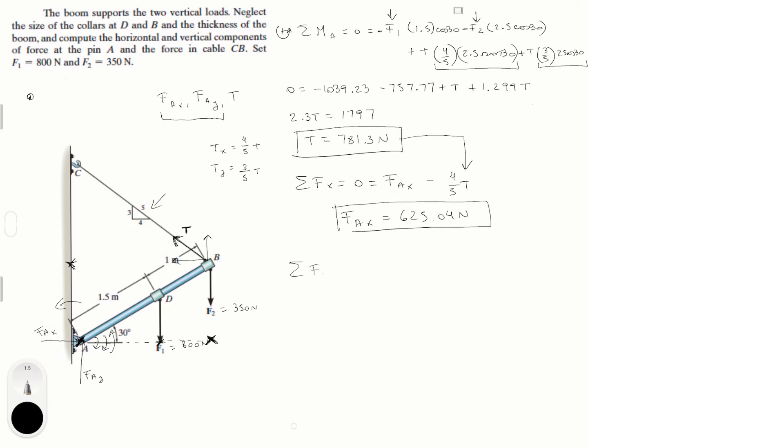And last but not least, sum of the forces in the y is equal to zero. In the y we have the reaction at A, the vertical reaction at A going up. You got f1 going down, f2 going down. That's why they're negative. Plus the y component of T which is T times 3 over 5.